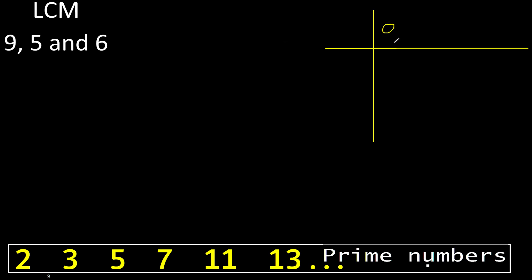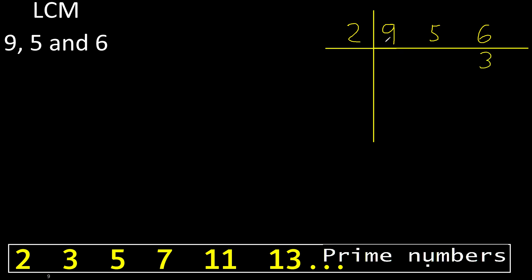Can 9, 5, or 6 be divided by 2? Yes, 6 can be divided by 2. 6 divided by 2 is 3. 9 cannot be divided by 2, therefore equal. Cannot be divided by 2.